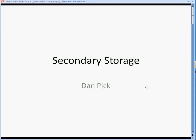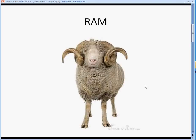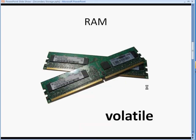So, secondary storage. Whilst RAM — random access memory — is volatile, meaning that if we switch the power off to a computer, it loses everything that's on there.